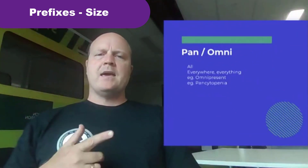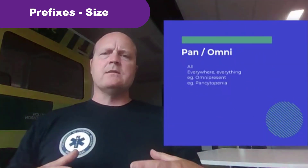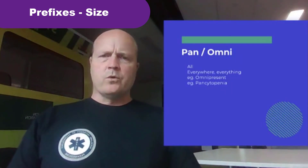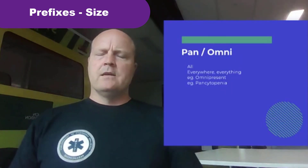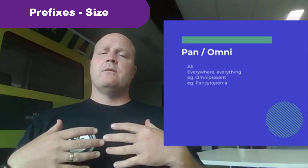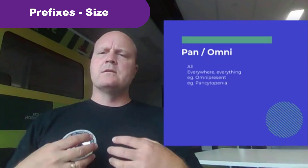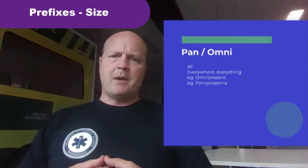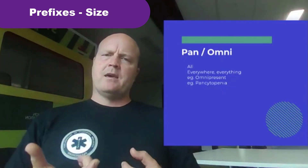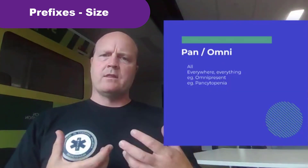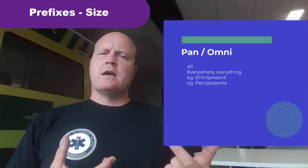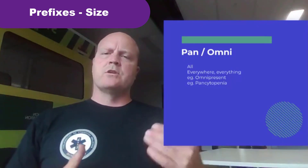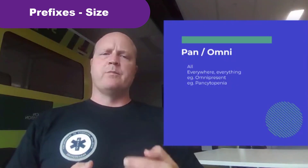Then we've got 'pan' or 'omni'. Pan or omni means all, everywhere, or everything. So if you think of the word omnipresent — this means that thing is present everywhere. And pancytopenia: pan means everywhere or everything, cyto means cell, and penia relates to a decrease. So pancytopenia is a decrease in all blood cell numbers.